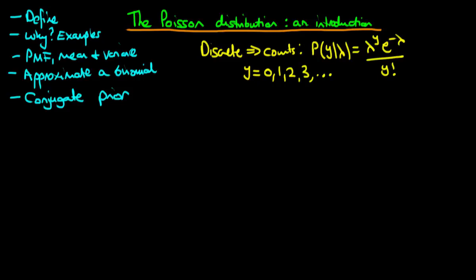In this video we're going to continue our introduction to the Poisson distribution. We'll derive the mean of a Poisson distribution, state its variance, and see how the selection of the parameter lambda determines the shape of the distribution via a MATLAB simulation. We'll also discuss when a Poisson distribution can approximate a binomial distribution, and finish by discussing the conjugate prior, which assumes lambda is gamma distributed.